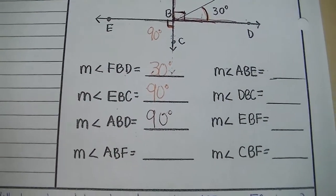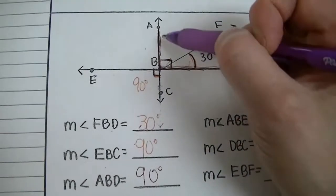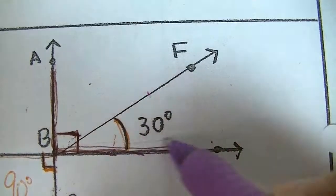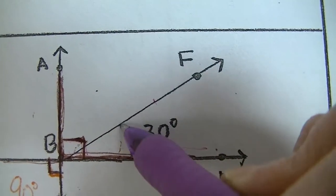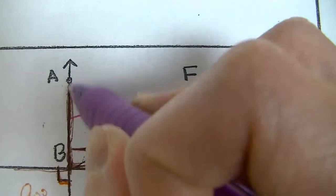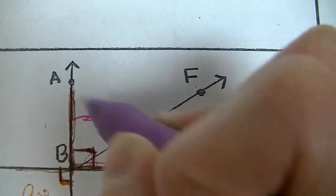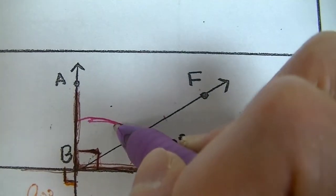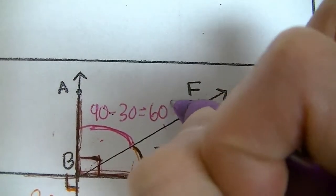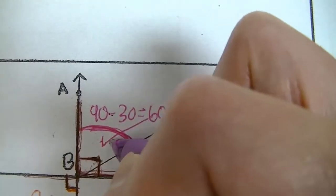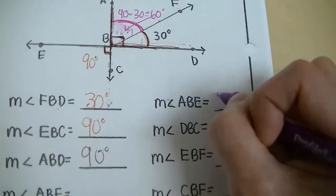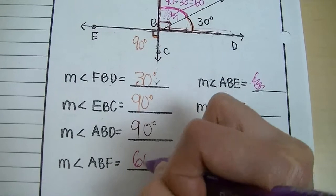Next, find the measurement of angle ABF. We know ABD is 90 degrees and FBD is 30 degrees. These two are complementary angles within that right angle, so to figure out ABF: 90 minus 30 equals 60. So the opening of angle ABF is 60 degrees.